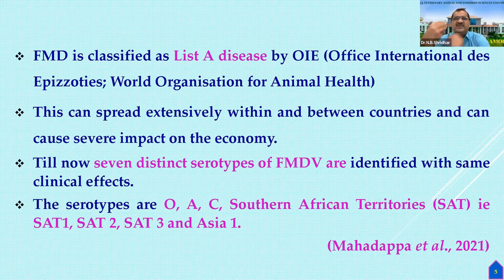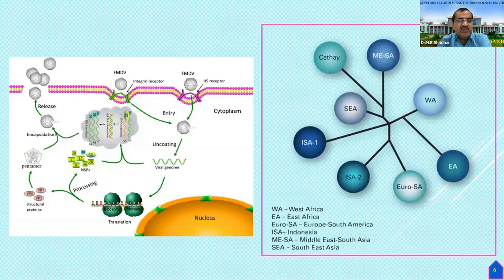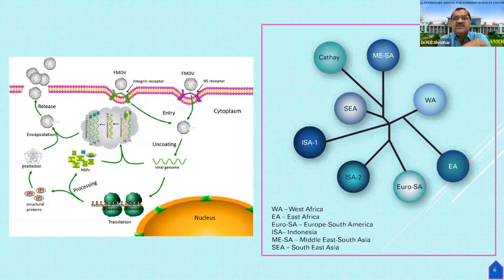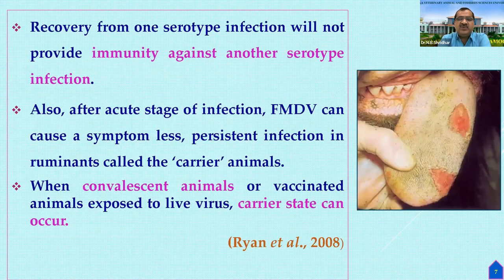This virus is highly contagious and spreads across West Africa, East Africa, Indonesia, the Middle East, and Southeast Asia. The FMD virus binds with the cell membrane and is translocated. Recovery from one serotype infection will not provide immunity against another serotype, which is why repeated outbreaks occur. After the acute stage, FMD virus can cause symptomless persistent infection — these animals are called carrier animals.